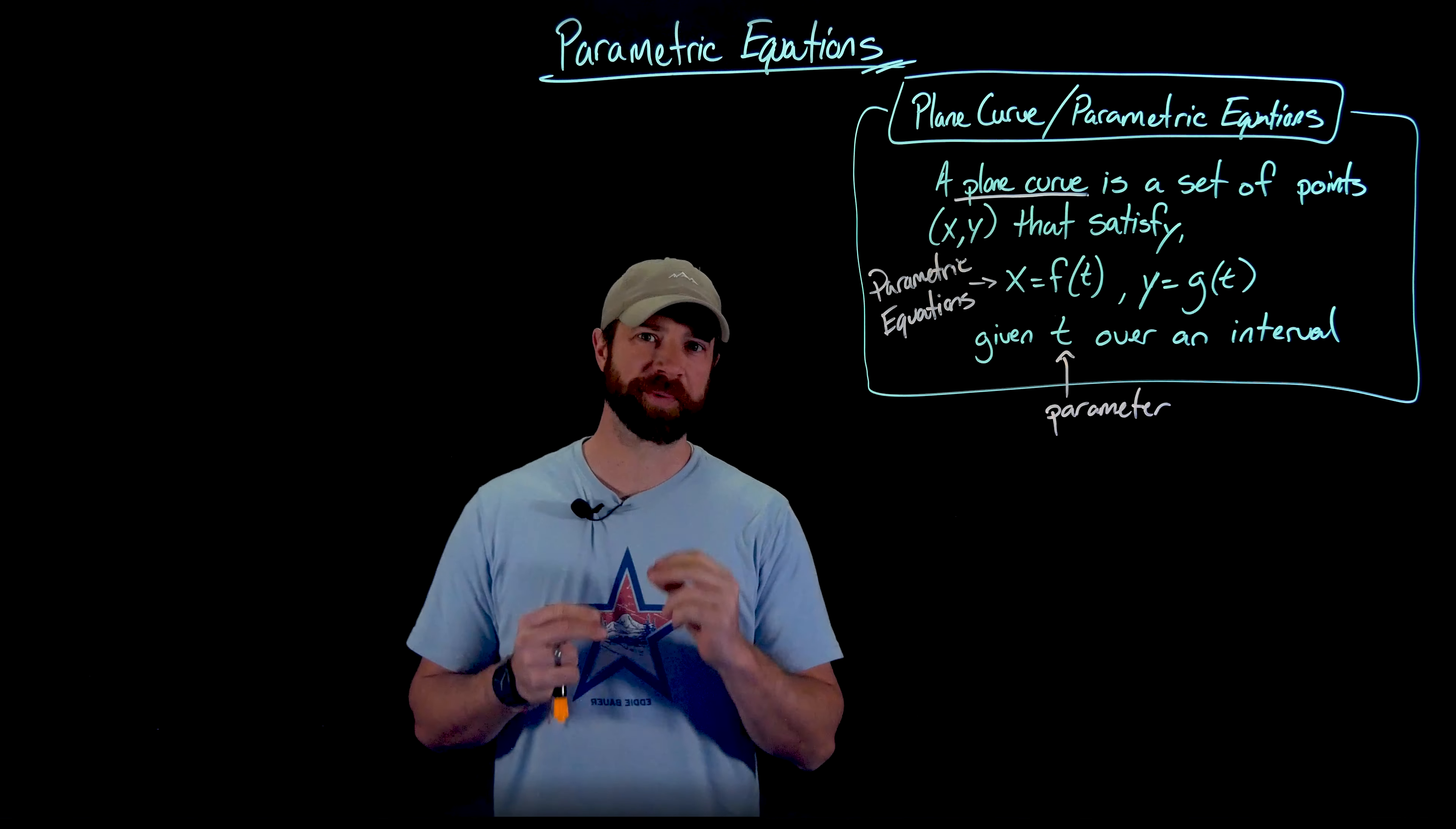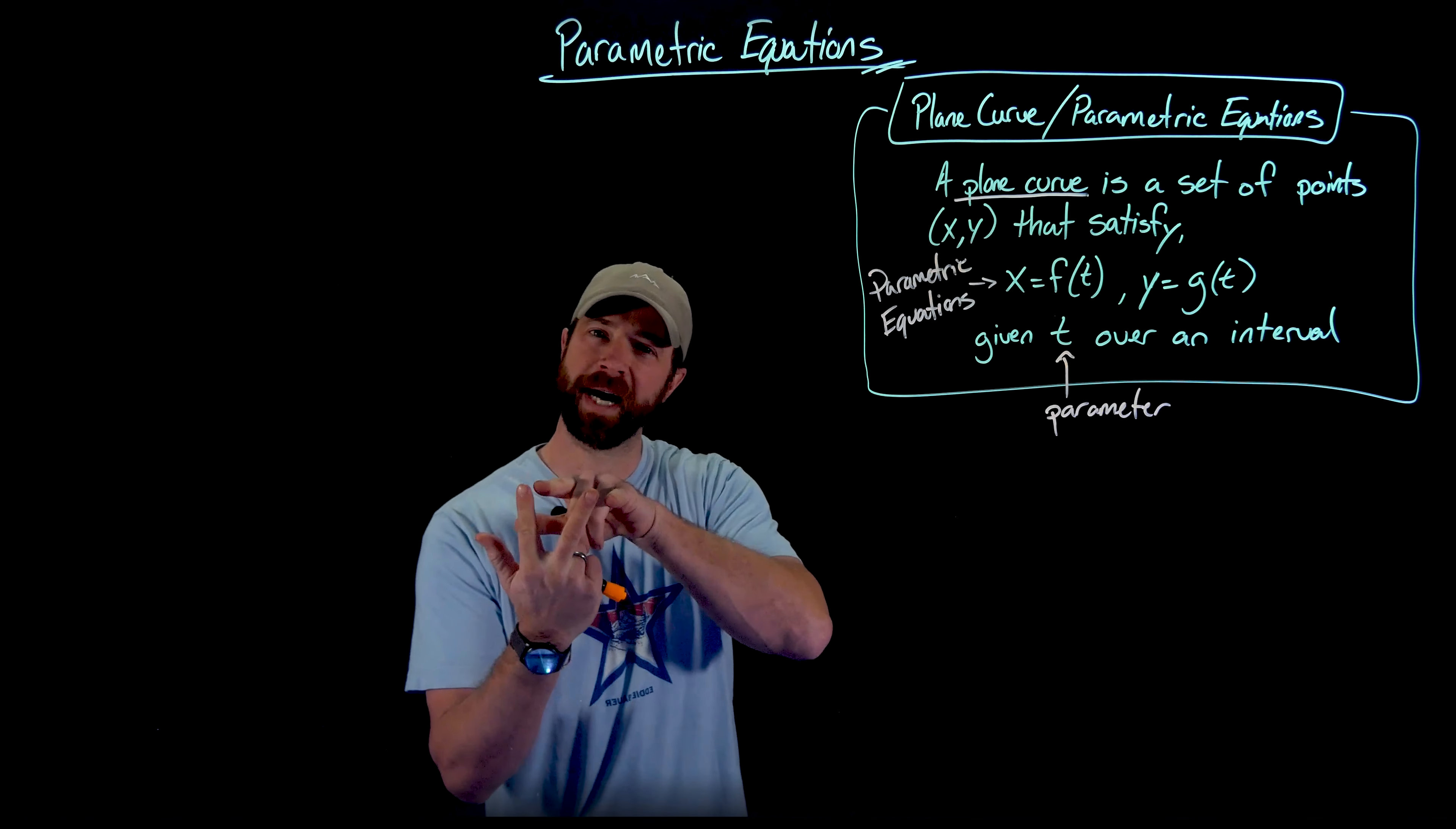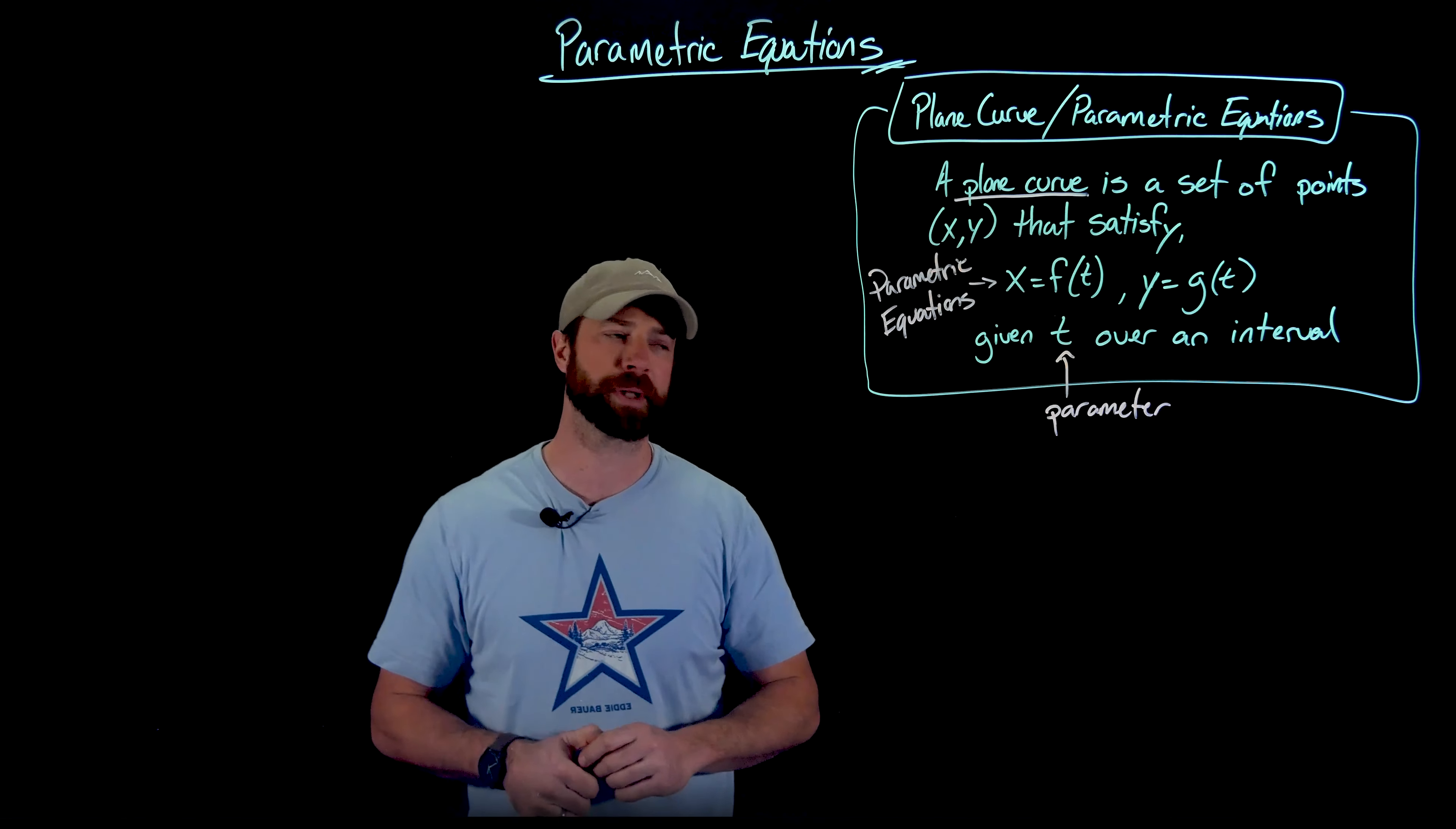To say it again because it's really important, what we're going to do is describe X and Y with this third player. So player three has entered the game. The player three is this parameter that's going to define X and Y separately. So there's not this tight link directly between X and Y. We're using a third-party variable to define both X and Y, but then we can graph those X and Y points as we always have on the rectangular plane.